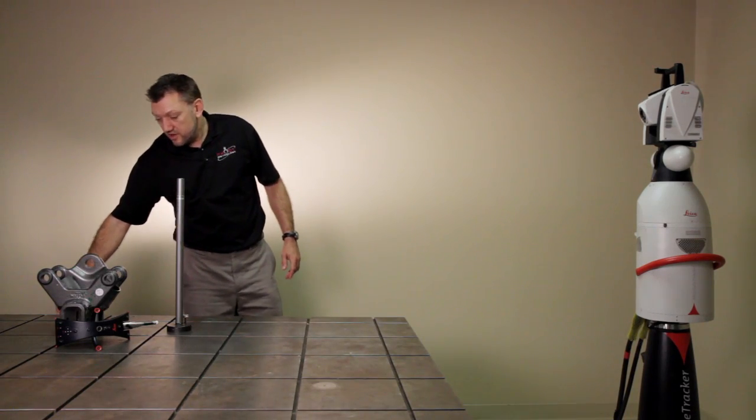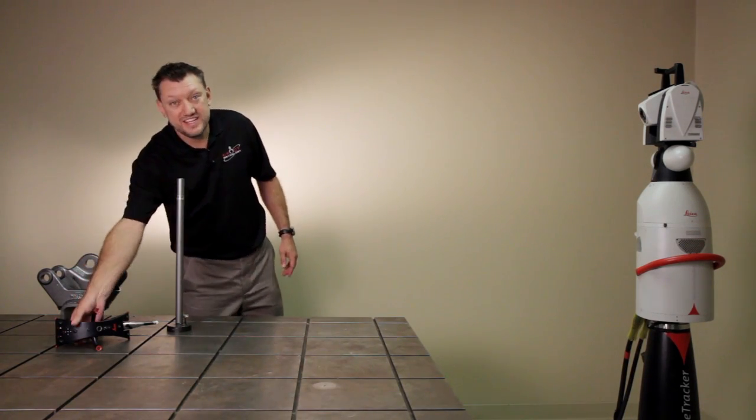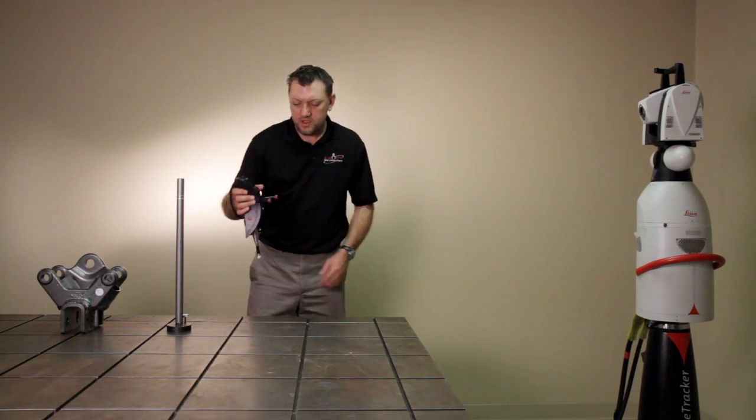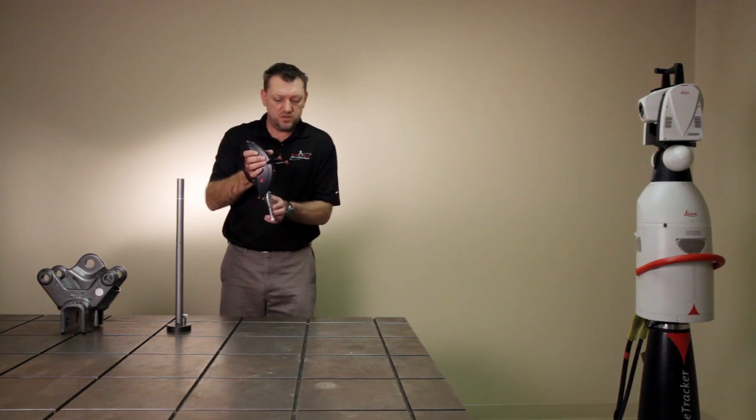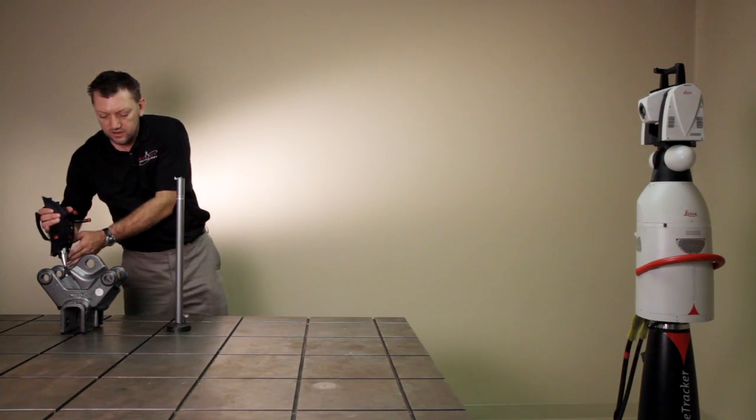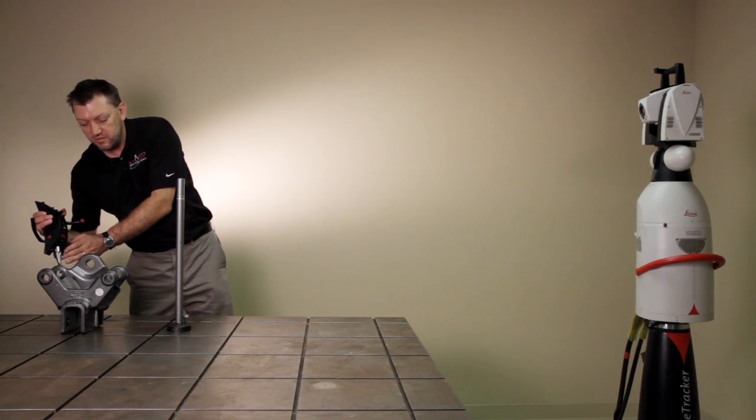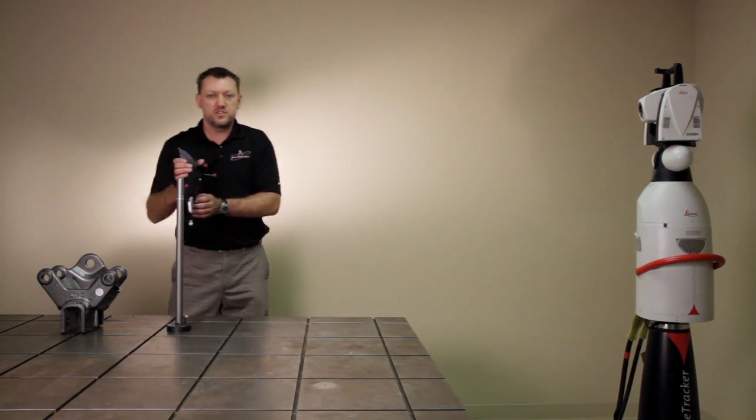Another unique feature of the Leica laser tracker is the T-Probe T-Cam system. With this system, I'm able to simply pick up the laser beam and measure now with an offset. Where this comes in extremely useful is in areas where I have insets, or if I'm trying to measure the backs of objects. It enables me to measure much quicker and with fewer setups.